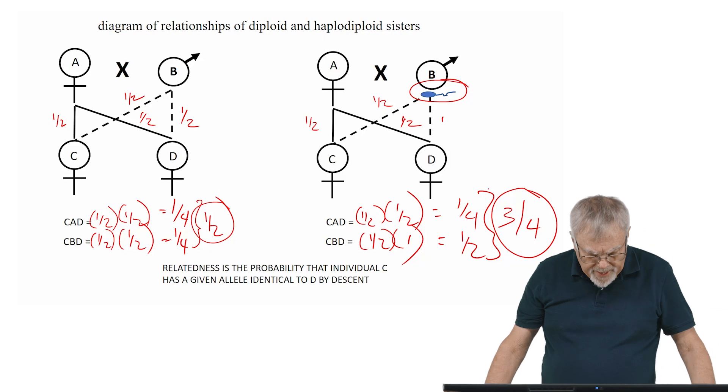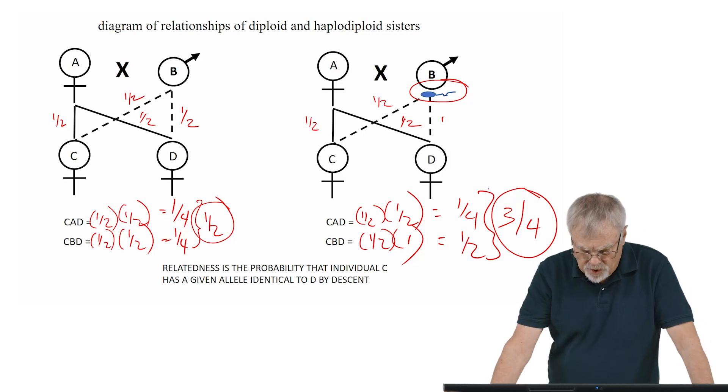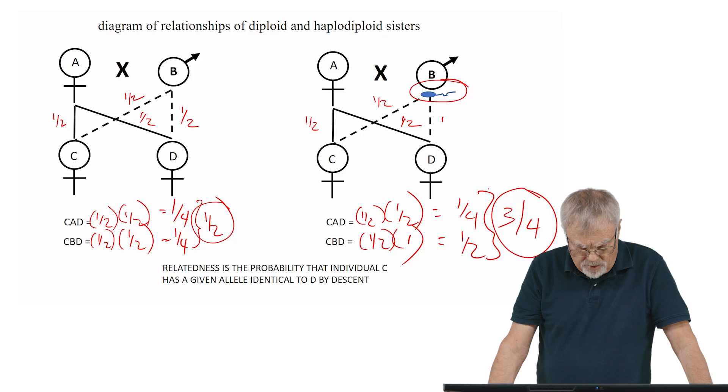So relatedness is the probability that individual C has a given allele identical to that of individual D by descent.